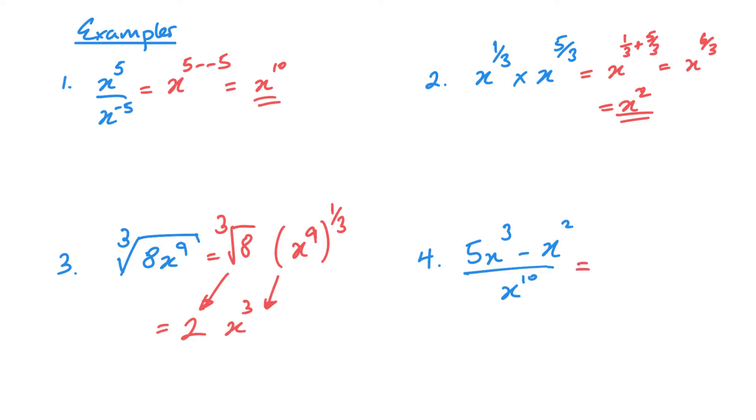The fourth one here, first we need to split these fractions up. And then we've got 5x cubed over x to the 10, so it's going to be 3 minus 10, so 5 to the power of negative 7. And then x squared divided by x to the 10 is 2 minus 10, so x to the negative 8.